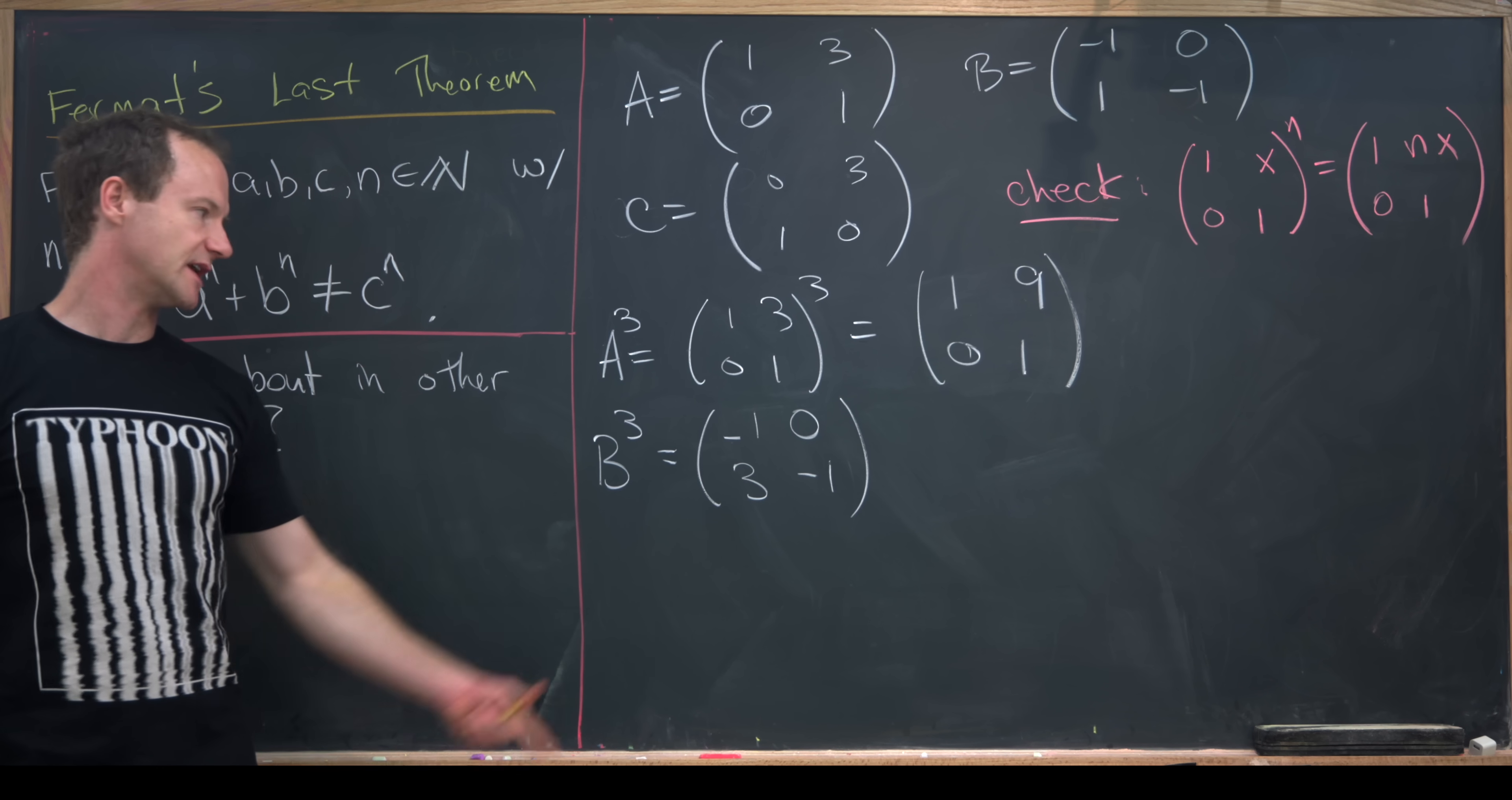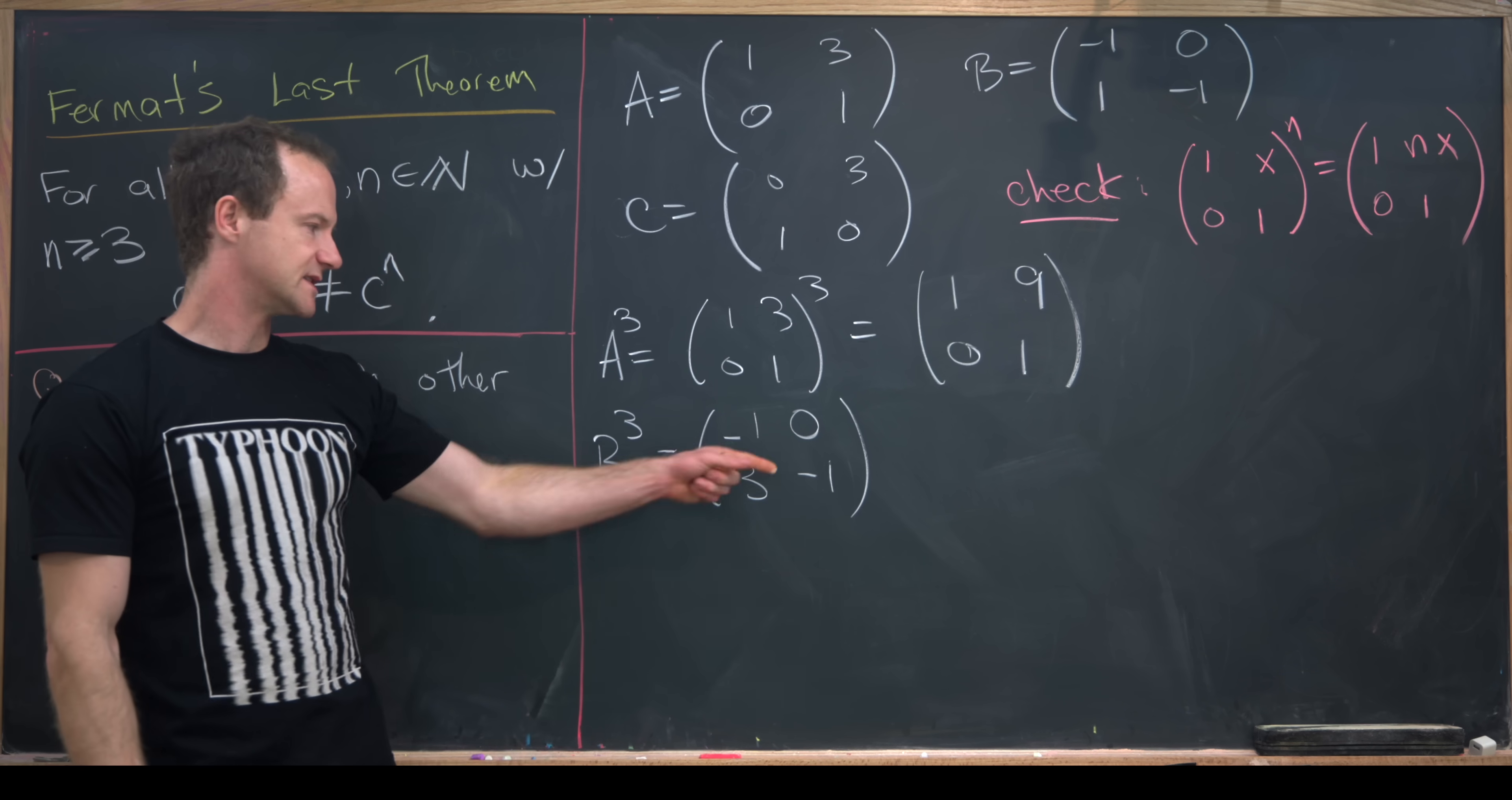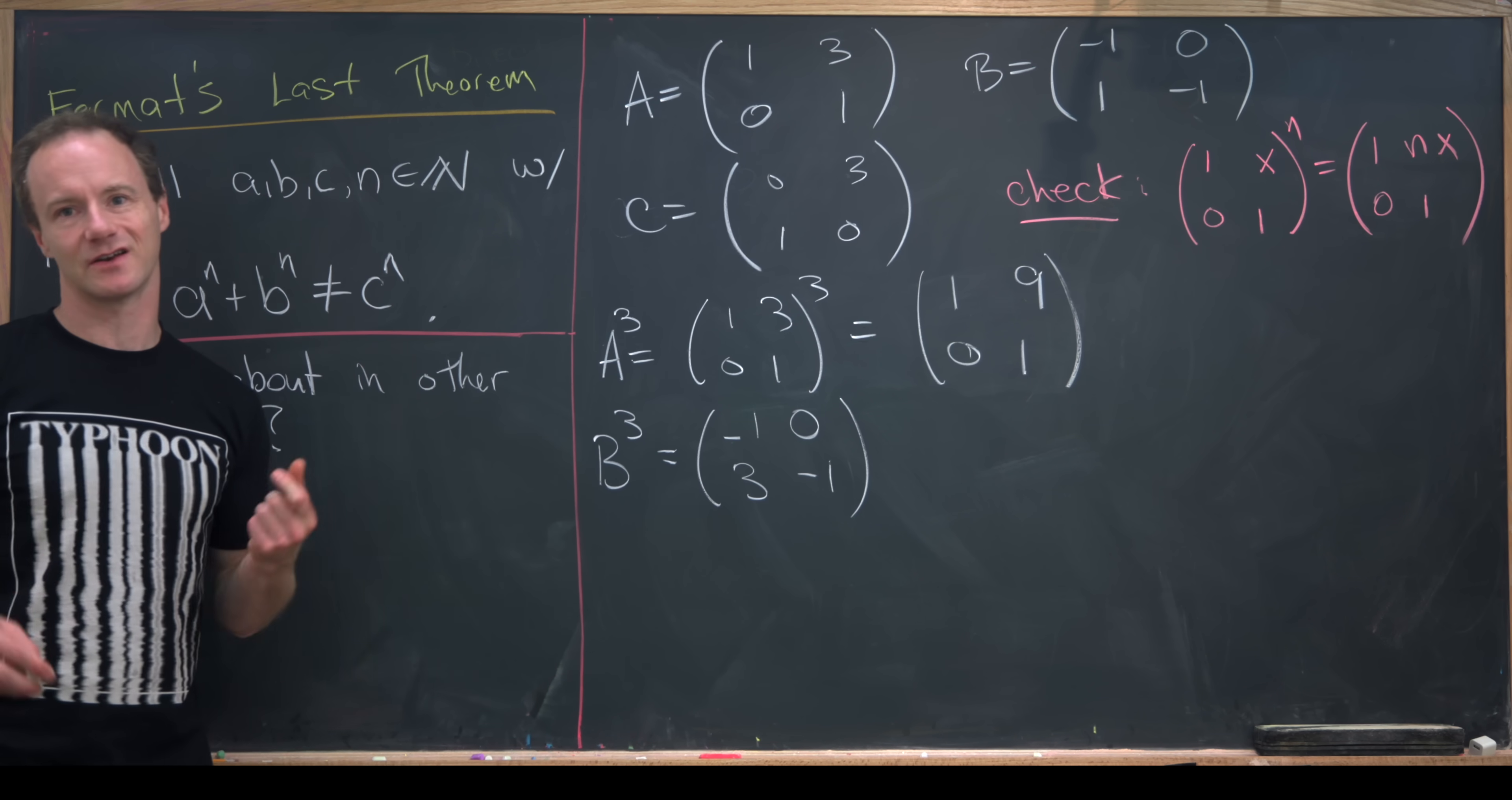So the signs alternate along the diagonal and the off diagonal, whereas the diagonal just stays at 1 or minus 1, whereas the off diagonal increases.